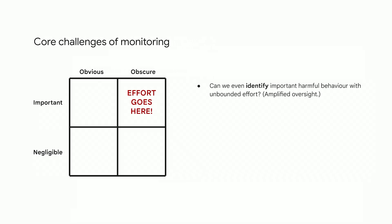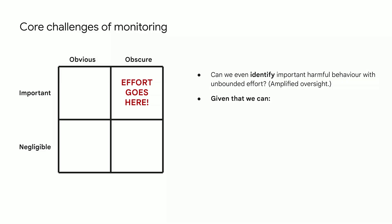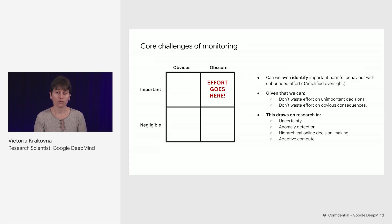This is trying to get to the point where we're able to prioritize effort and focus on monitoring the most valuable cases. An important caveat is that all of this assumes that, in principle, if we were to provide unbounded effort, we would be able to identify harmful behavior — and it's not at all obvious that this will be possible. This is what we depend on amplified oversight to provide, which is covered in a different talk. Given that we can do that, we don't want to waste effort on unimportant decisions or obvious consequences. This draws on research in uncertainty, anomaly detection, making decisions hierarchically in an online setting, and adaptive compute — deploying the right amount of effort in the right setting, possibly based on intermediate steps.